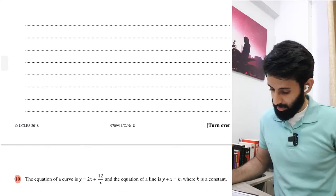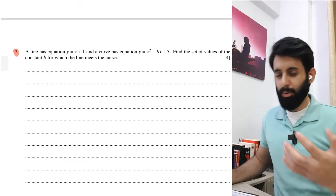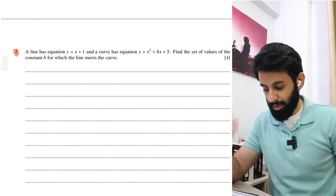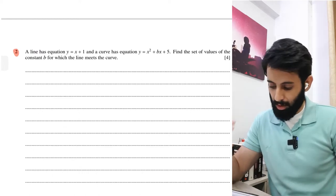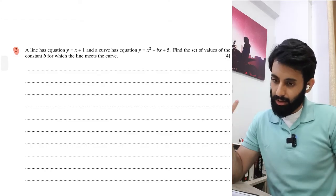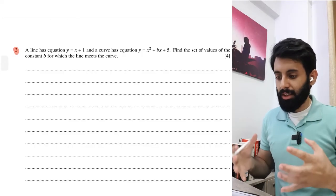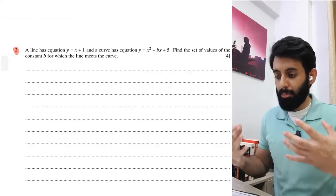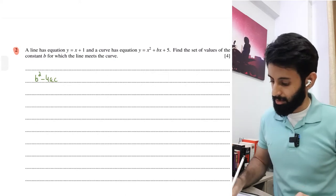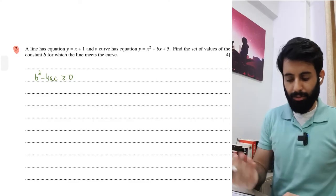Now a question from October/November 2018, Paper 1, Variant 1, which deals with discriminant applied to a curve and straight line. A line has equation y = x + 1 and a curve has equation y = x² + bx + 5. Find the set of values of constant p for which the line meets the curve. 'Meets the curve' can happen by being tangent or cutting at two distinct points, so b² - 4ac ≥ 0.